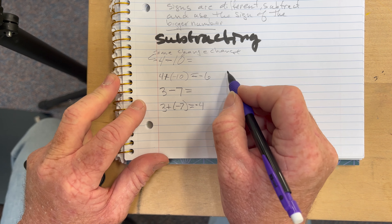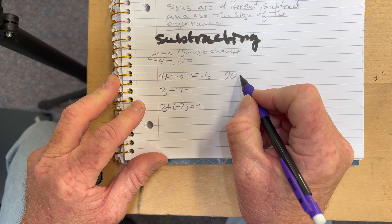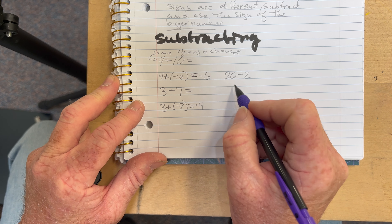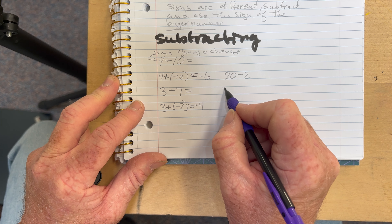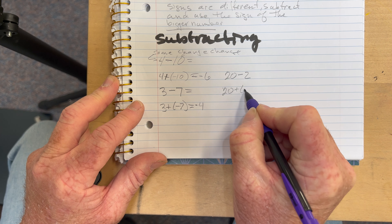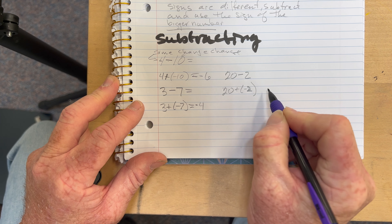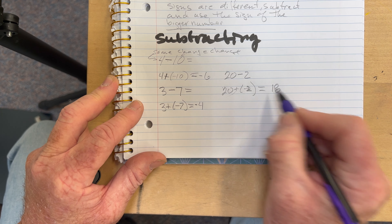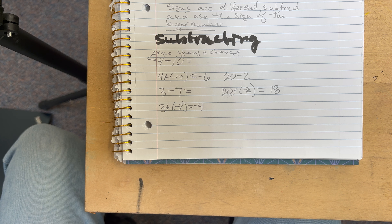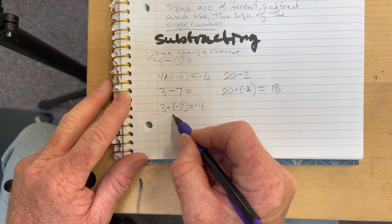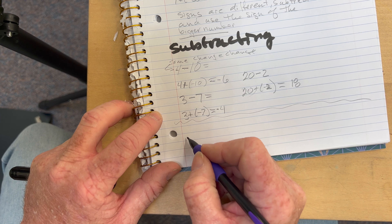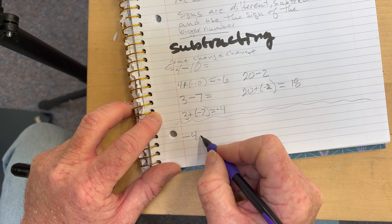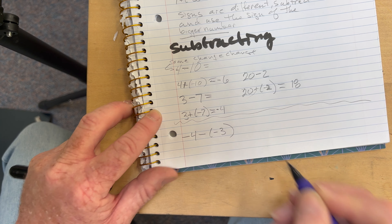What if I have 20 minus 2? I'll still use the same principles: change that to 20 plus negative 2. 20 minus 2 is 18, my larger number is positive, so that stays positive 18. What if I have negative 4 minus negative 3? That's a little tricky.